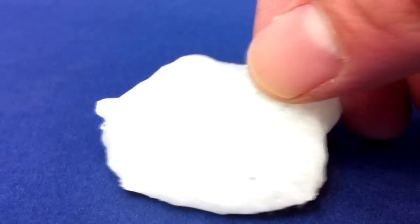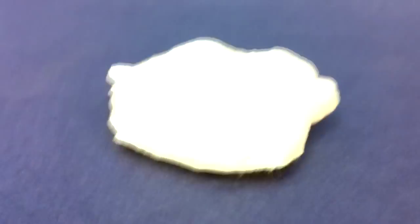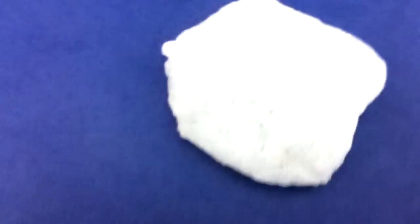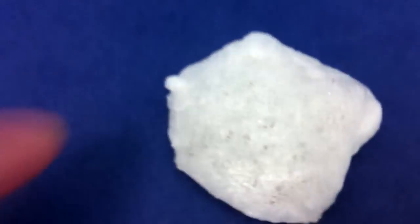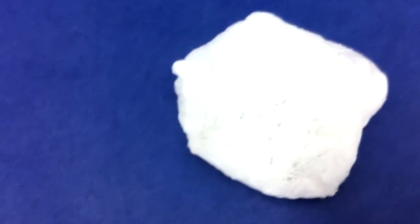What happens is when you put the styrofoam cup into the acetone, the polystyrene dissolves and you're left with the cross-linked compounds that hold the polystyrene long chains together to give it that strength. The cross-linked chemicals that are left are really hard and stiff.